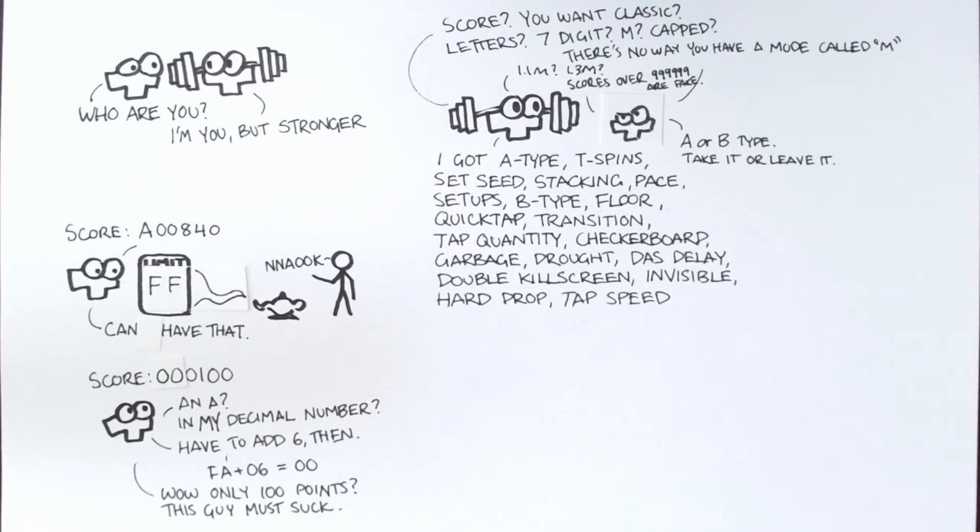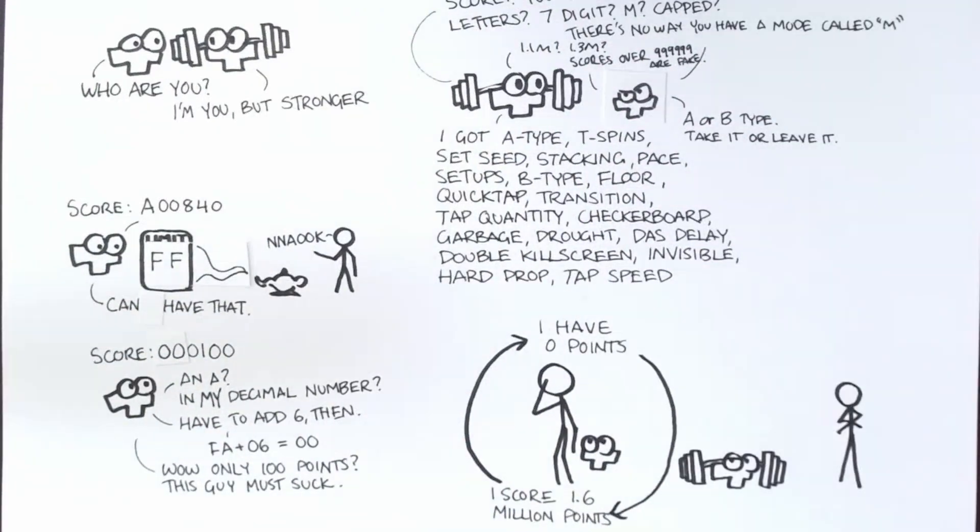What happens when you add 6 to FA? You get 00, because 250 plus 6 equals 256, and a byte ranges only 0 to 255. So we're replicating a scoring system where it resets every time you cross 1.6 million. What's going wrong?